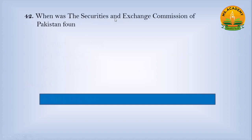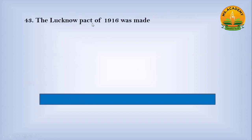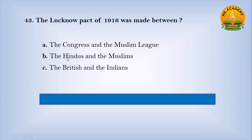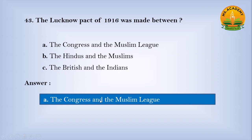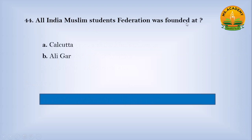When was the Securities and Exchange Commission of Pakistan founded? Option A, 1st January 2000; Option B, 1st January 1999; Option C, 4th January 1998. Answer: B — 1st January 1999. The Lucknow Pact of 1916 was made between: Option A, the Congress and the Muslim League; Option B, the Hindus and Muslims; Option C, the British and the Indians. Answer: A — the Congress and the Muslim League. The All India Muslim Students Federation was founded at: Option A, Kolkata; Option B, Aligarh; Option C, Dhaka. Answer: C — Dhaka.